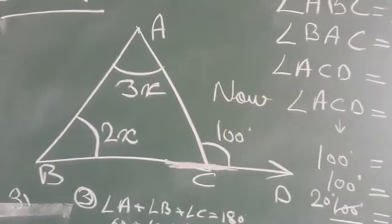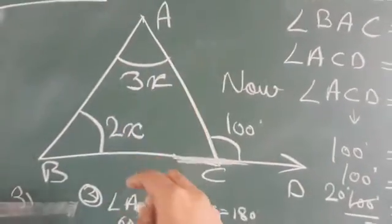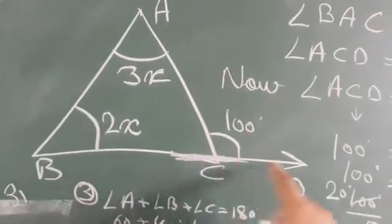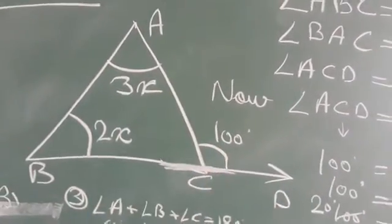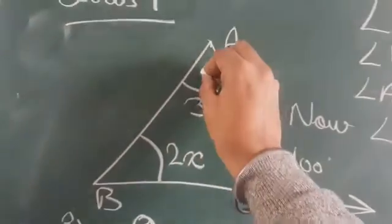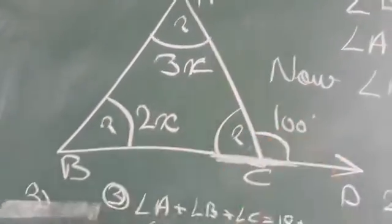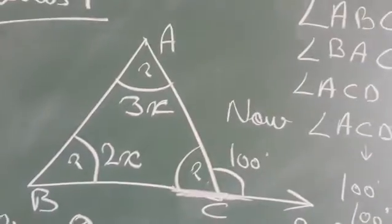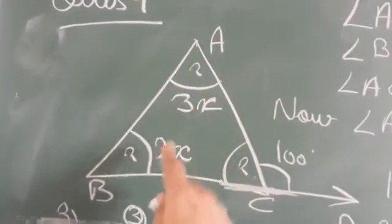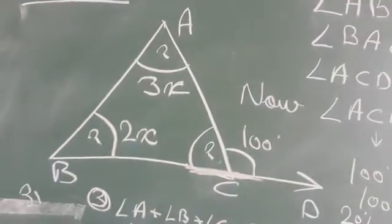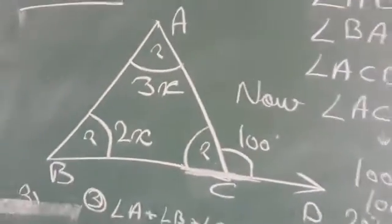बच्चों देखिए, इसमें triangle है और triangle की side produce कर दी है। यहाँ पर 100 degree बन रहे हैं तो हमको तीनों angle निकालने हैं - यह वाला भी, यह वाला भी। Figure में A की value 3x है, B की 2x है और C का interior angle निकालना है।